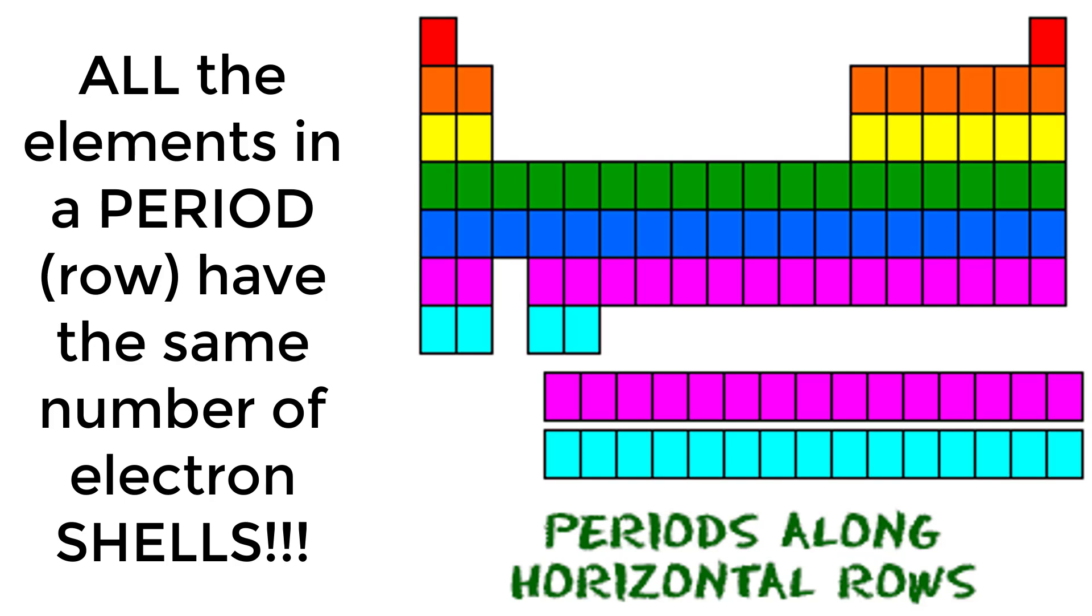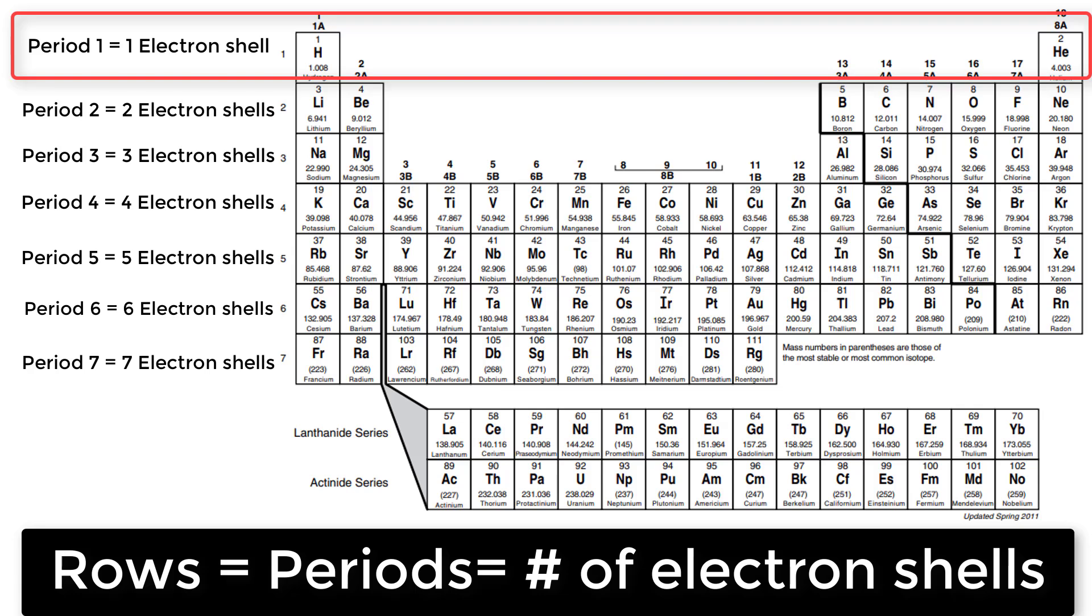All of the elements in a period have the same number of electron shells. For example, every element in the top row, or the first period, has only one electron shell for its electrons.